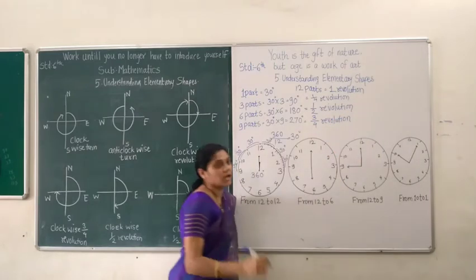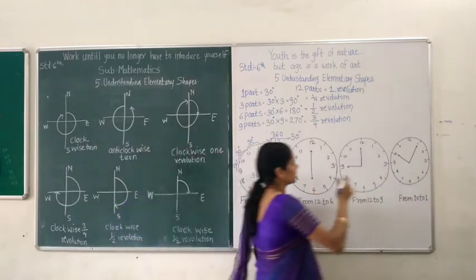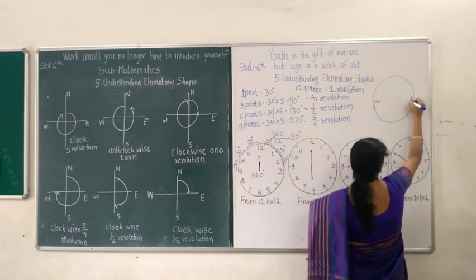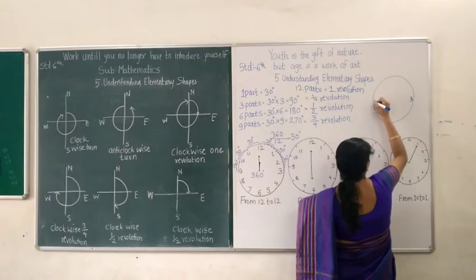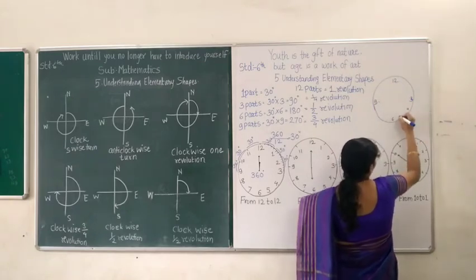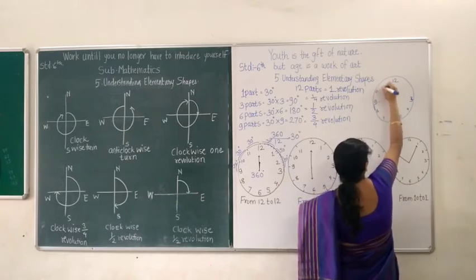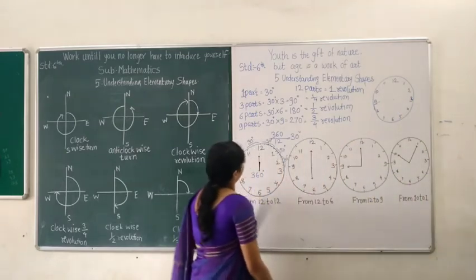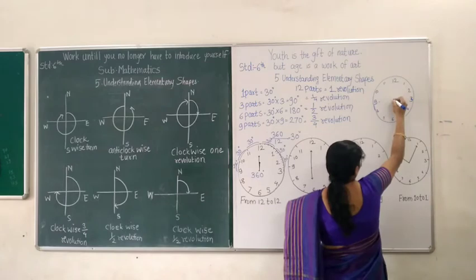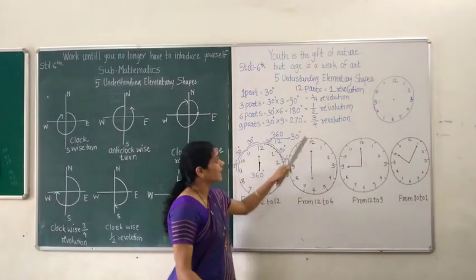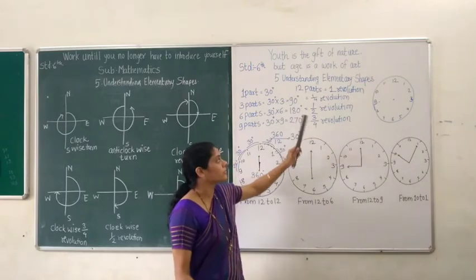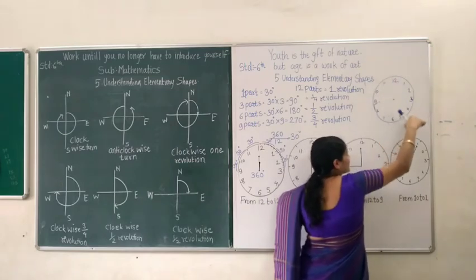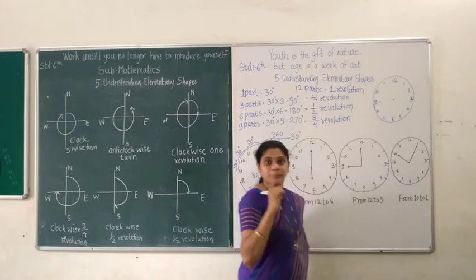Now to understand one-fourth, half, and three-fourths revolution, look at the clock diagram. The main positions are 3, 9, 12, and 6. Now: if it covers the total circle — from 12 to 12 — that is one complete revolution. From 12 to 6 it completes only half circle, that means half revolution. From 12 to 9 it covers three out of four parts — 12 to 3, 3 to 6, 6 to 9, and 9 to 12 — so it is three-fourths revolution.